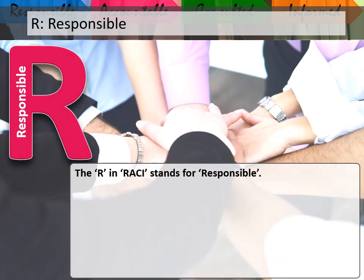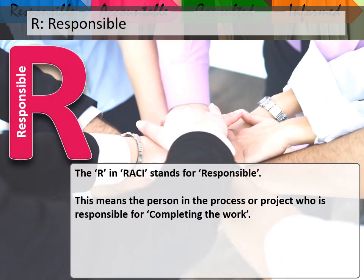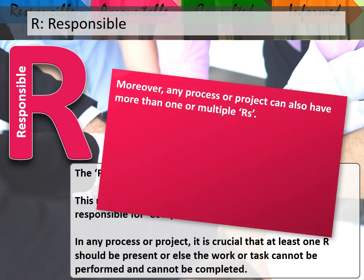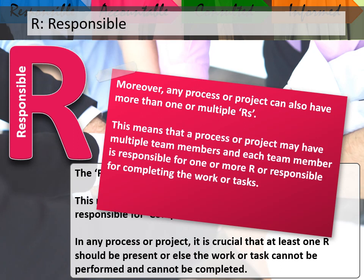The R in RACI stands for Responsible. This means the person in the process or project who is responsible for completing the work. In any process or project, it is crucial that at least one R should be present, or else the work or task cannot be performed and cannot be completed. Moreover, any process or project can also have more than one or multiple R's, meaning multiple team members can each be responsible for completing the work or tasks.